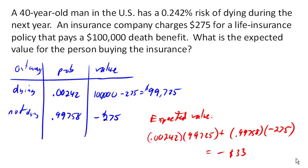It's not surprising that this value is negative — that's the only way the insurance company can afford to offer policies. That $33, on average, is what pays for their expenses, profits, and agent costs. The reason they can afford to pay out the occasional $100,000 benefit is because of all the people who don't die and balance it out. So even though this has a negative expected value to the purchaser, there's certainly security in knowing your family's cared for, which might make that expense worthwhile.